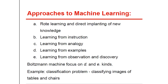There are five main approaches to machine learning in general. The first is rote learning and direct implanting of new knowledge, characterized by memorization of given facts and data. Then, learning from an instructor, such as a teacher. Third is learning from analogy or similarity. Fourth is learning from examples, where a set of examples and counterexamples are given to the system. And the last is learning from observation and discovery, a general form of learning also called unsupervised learning. The Boltzmann machine learning belongs to the latter two classes — learning from examples and learning from observation and discovery.